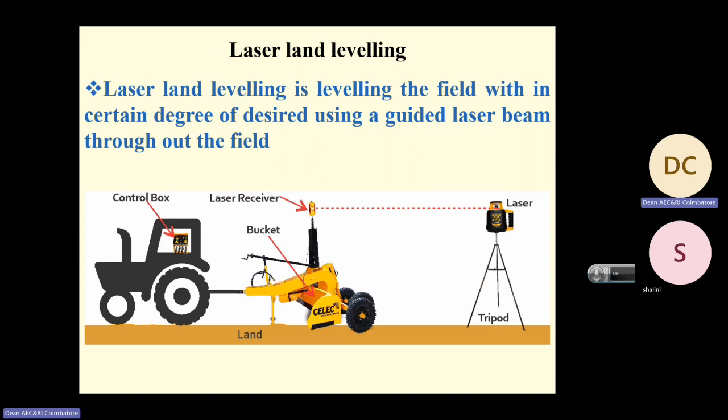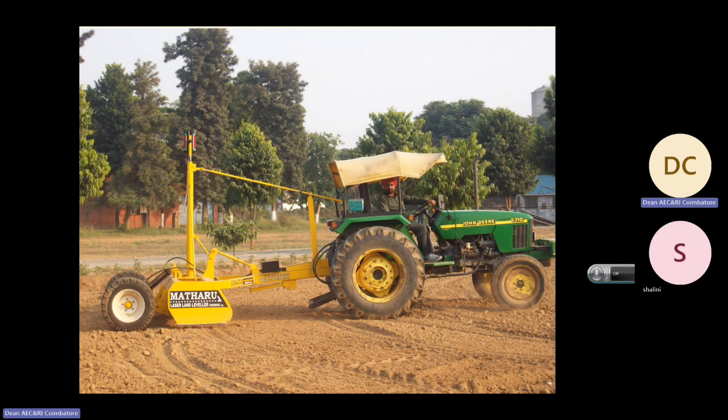Laser leveling is also one concept of precision farming, where the land is leveled using laser-guided levelers. The laser-guided leveler automatically levels the field and can maintain any required slope — for example, two percent or three percent slope can be maintained in the field.